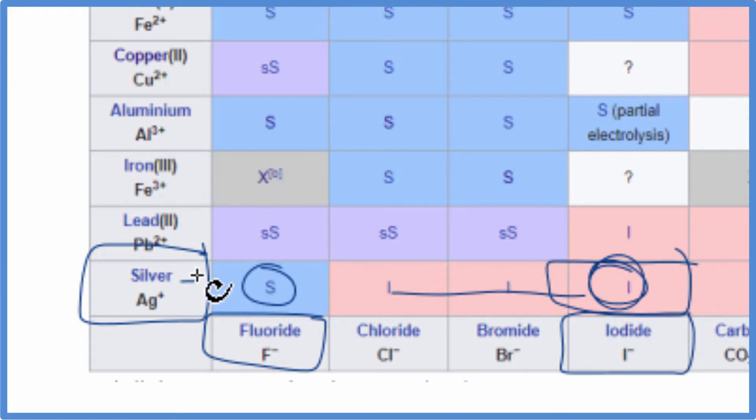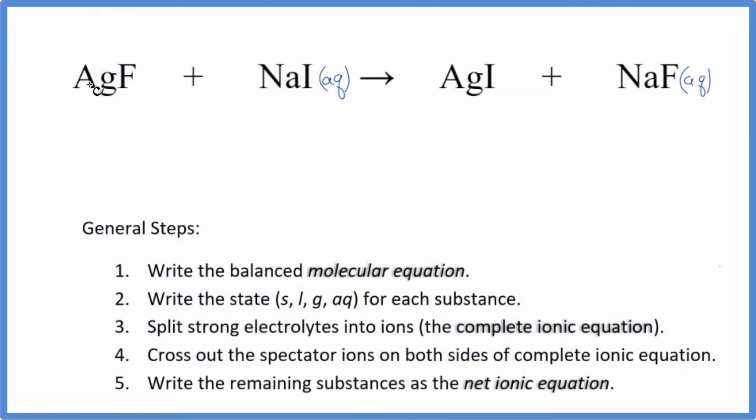So we have aqueous AgF and solid AgI. Let's go back to our equation. We said AgF is aqueous, so that'll dissolve and split apart into its ions. But AgI will be a solid and a precipitate. This will be a precipitation reaction. Okay, so we have our states. Next,